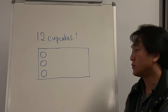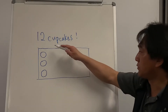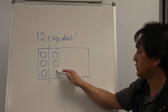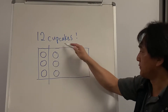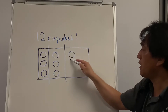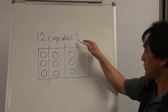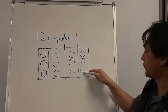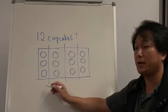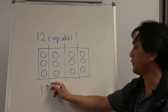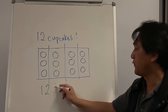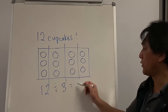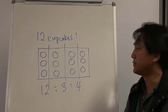So what we're doing here is called division. So 3, 6, 9, and 12. What we just did was 12 divided by 3. Now we can make 4 columns.